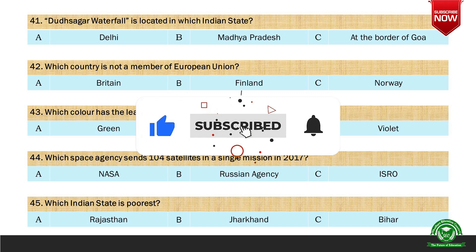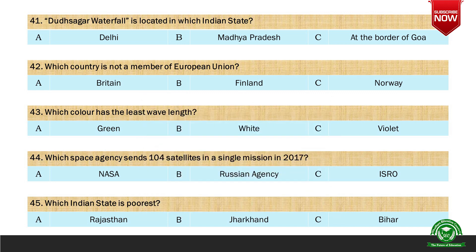Next question: Which country is not a member of the European Union? Here are the options: A. Britain, B. Finland, and C. Norway. And the right option is C. Norway.